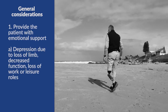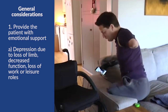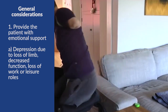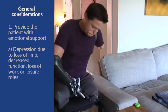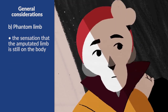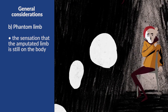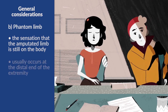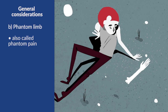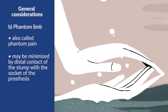The patient may feel depressed due to the loss of a limb or decreased function — maybe they can't go back to work or do leisurely roles like playing sports with their kids. There also could be phantom limb sensation. Those who've had a limb removed report that it can feel as if the amputated limb is still there. This painless feeling is known as phantom limb sensation and usually occurs at the distal end of the extremity.